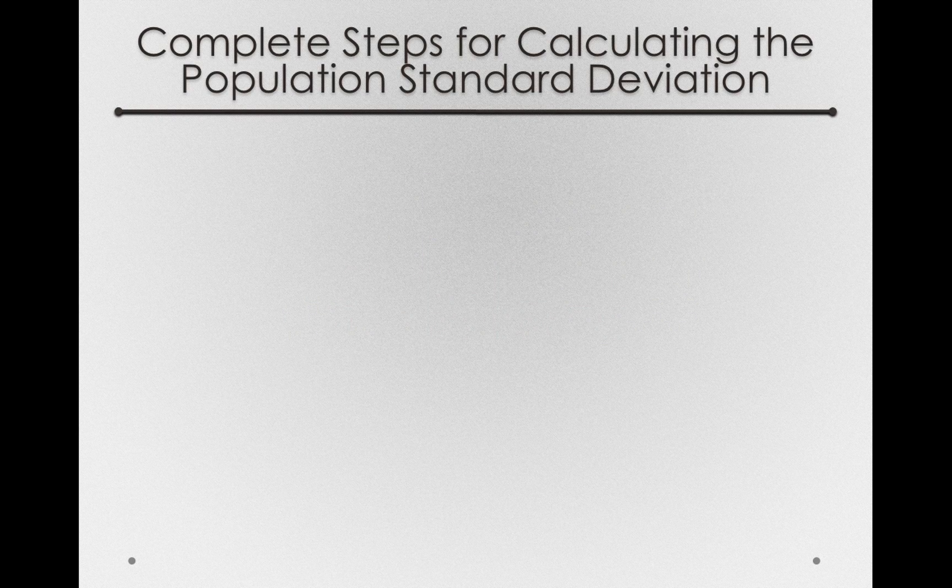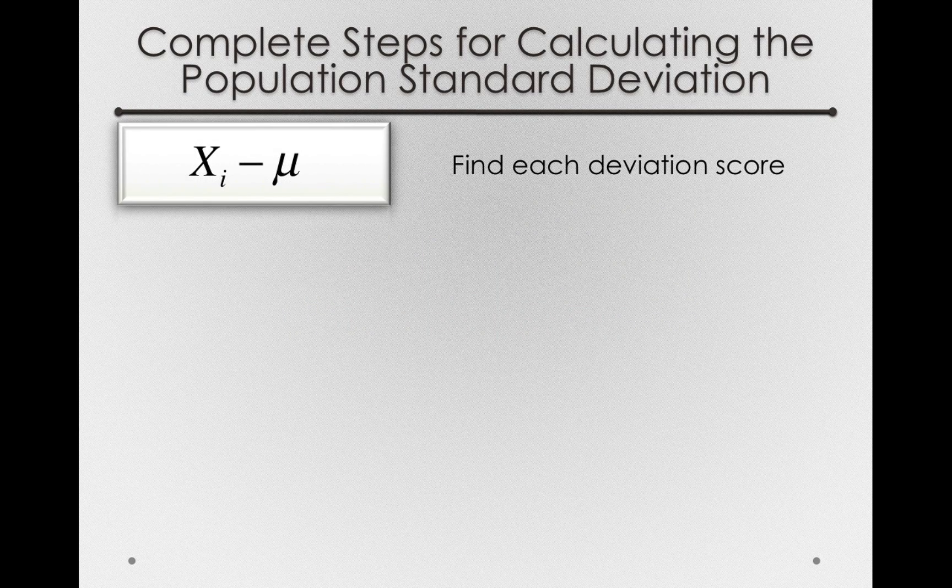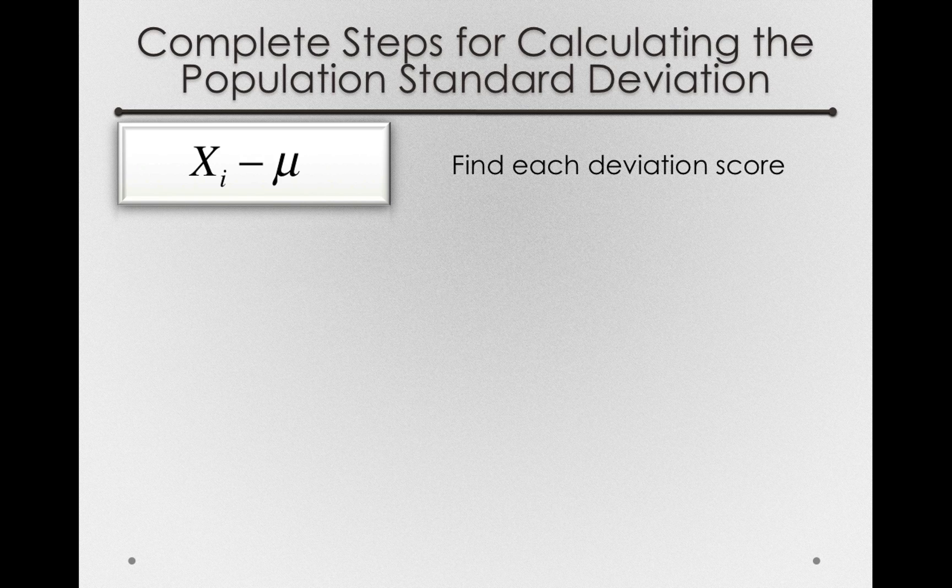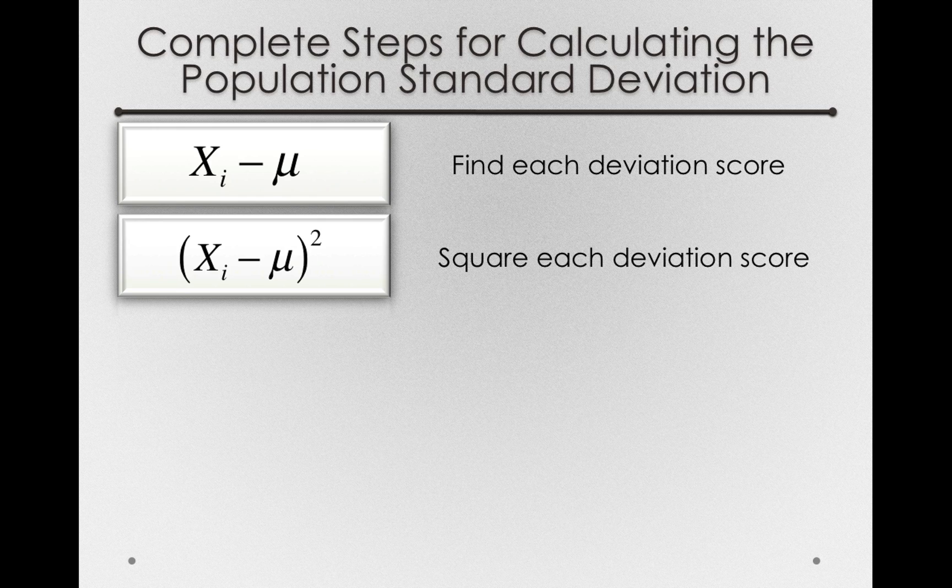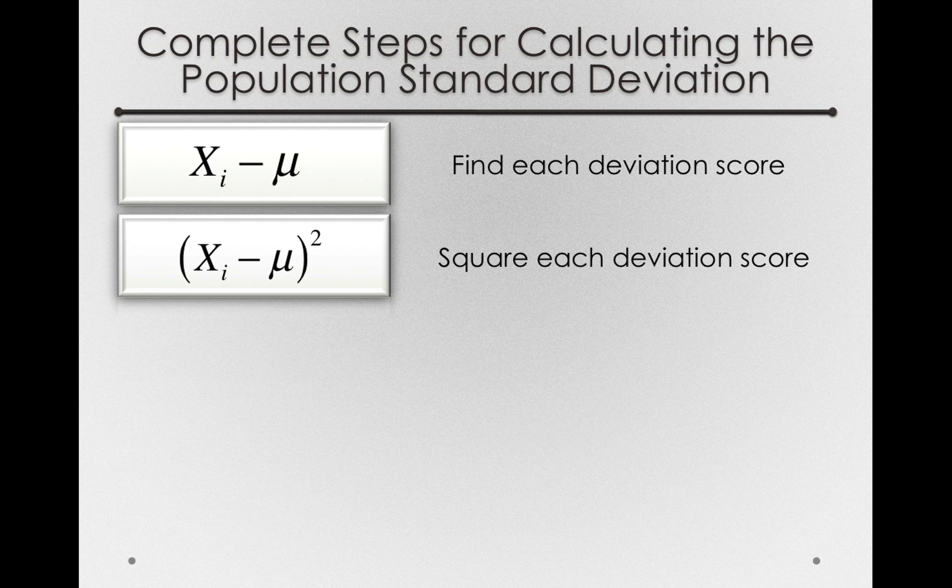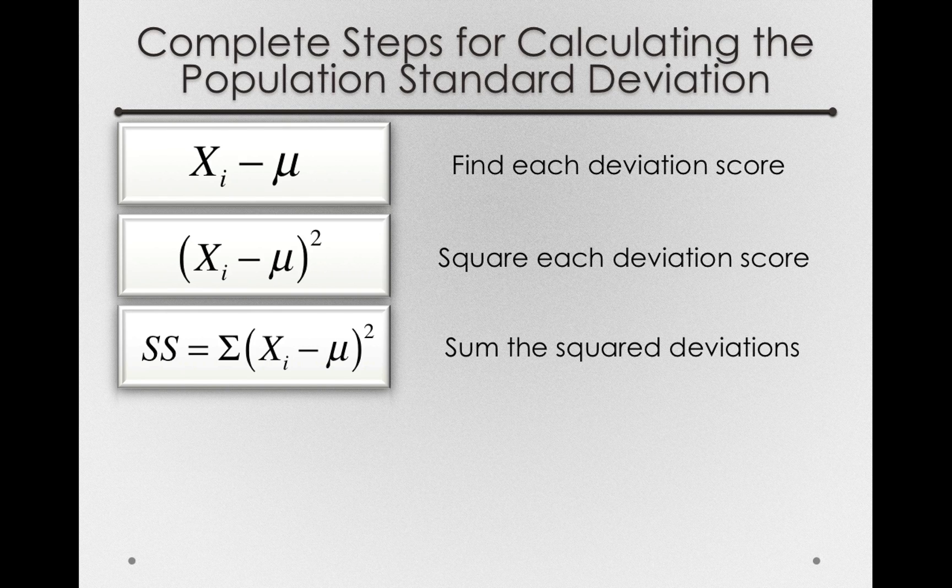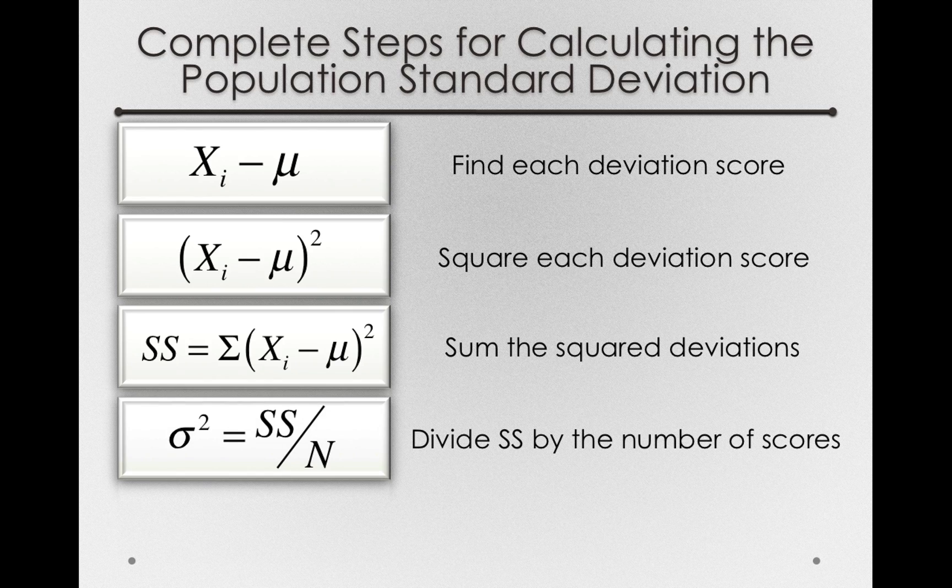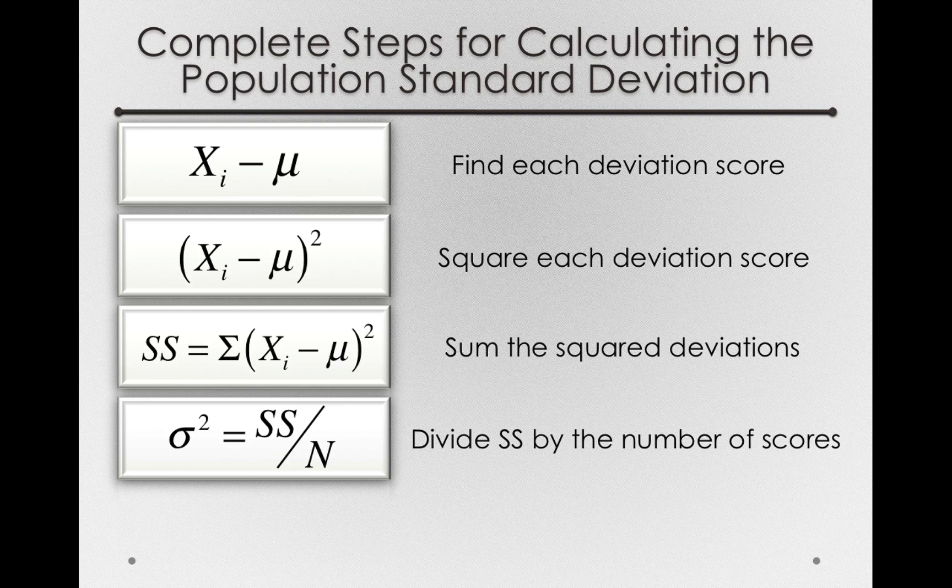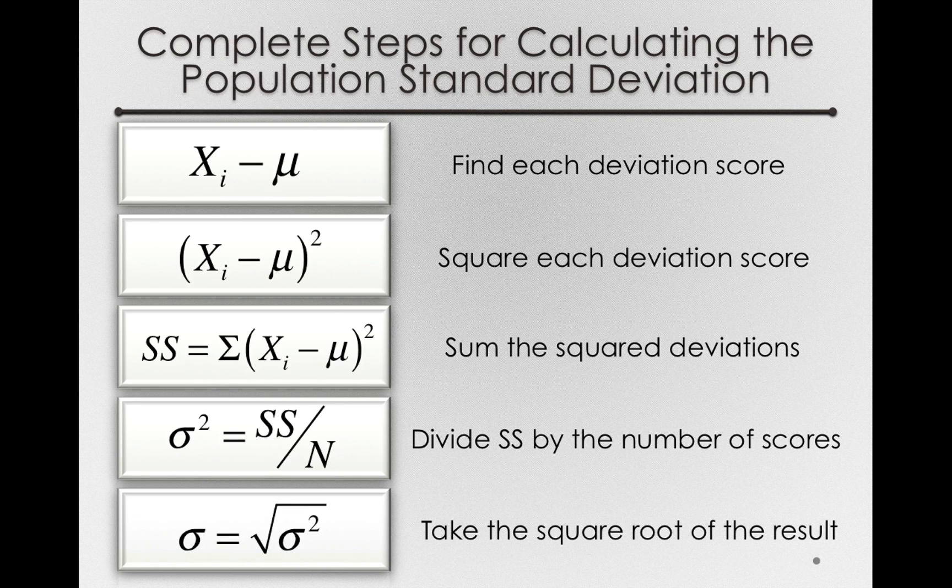Now if we were to calculate the standard deviation of a population by hand, it would be five different steps. First, we would find each deviation score, so the distance of each point to the population mean. We would square each of those deviation scores—remember, that has its own name, those are the squares. We would then find the sum of those square deviations—remember, that has its own term as well, the SS. Then we would divide the sum of squares by the number of scores we have in that population, which would give us the population variance. And then to find the standard deviation, we would just take the square root of the result.